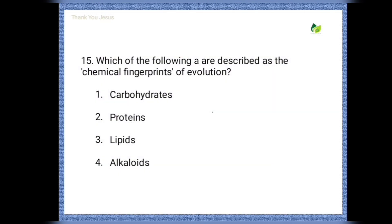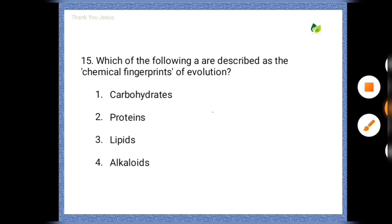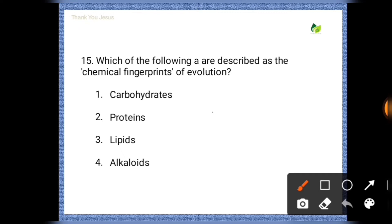Next question: Which of the following substances are described as the chemical fingerprints of evolution? Options are: carbohydrates, proteins, lipids, alkaloids. The correct option is proteins.